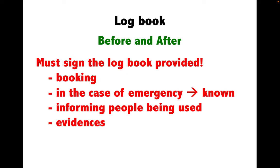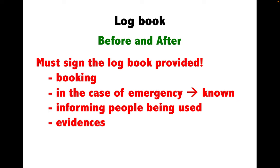A logbook is provided for nearly all instruments. It is for recording the workloads of each instrument, not for finding someone to blame. Please fill in your information before and after using each instrument. If a logbook is fully filled by users and the instrument eventually breaks, the reason is clear — it has been used heavily — and the executive staff can consider purchasing a new machine or increasing the number of instruments accordingly. The logbook also indicates who has the instrument booked, and provides good evidence for maintenance staff to consult the last user about any issues.